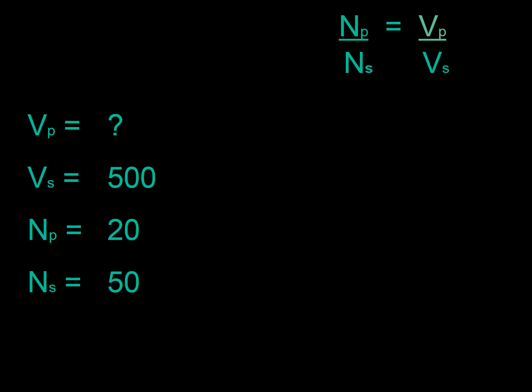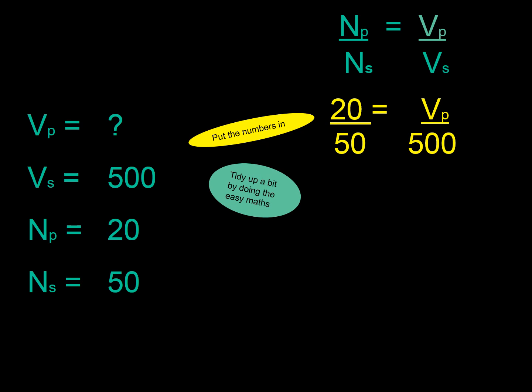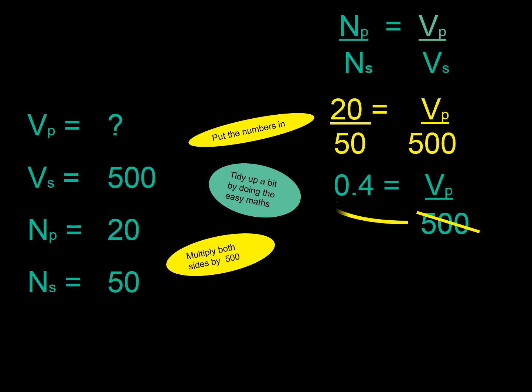Have another go. You try it yourself. If you need to pause it, you go for it. All the numbers in the right places. Do a bit of tidying up. Multiply both bits through, and rearrange it. Get rid of the 500 from there. Take it to the other side. Looks like it's coming out at 200.